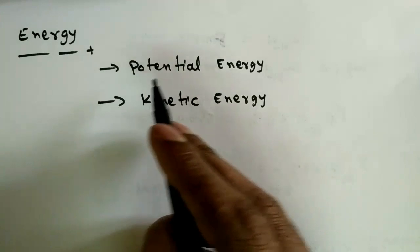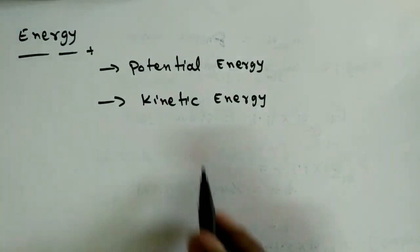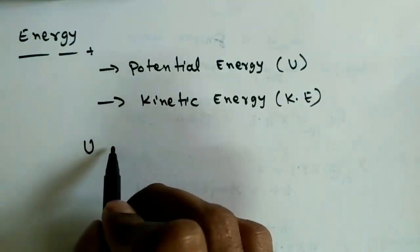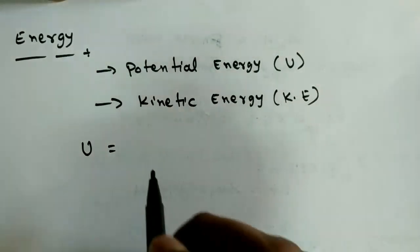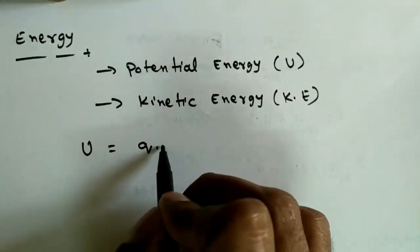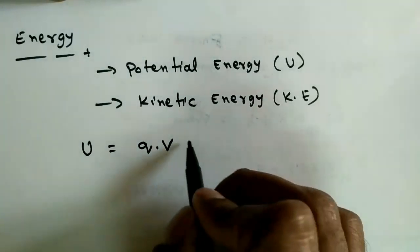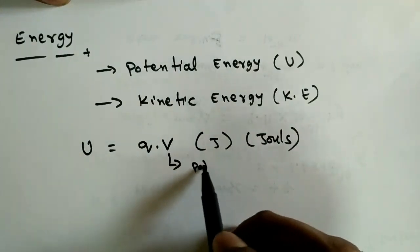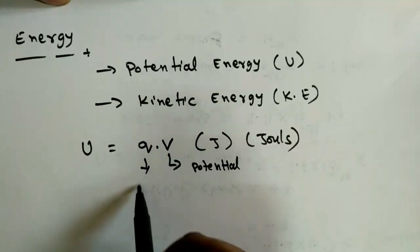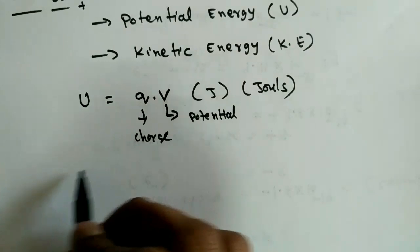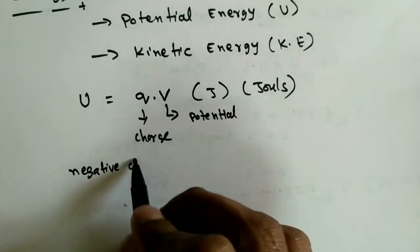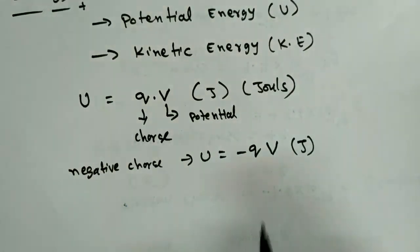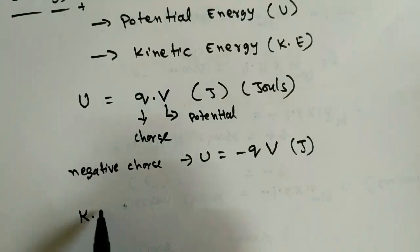Next we discuss energy, which has two types: potential energy and kinetic energy. Potential energy, denoted U, is the product of the charge and the voltage at that point: U = Q × V, with units of joules. For a positive charge, U = Q × V; for a negative charge (electron), U = −Q × V, still in joules.